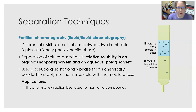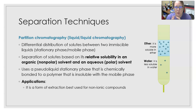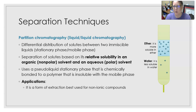Next is partition chromatography, a liquid-liquid chromatography based on the differential distribution of solutes between two immiscible liquids — two liquids that do not mix, like oil and water. Those two liquids serve as the stationary phase and the mobile phase, and separation is based on the solute's relative solubility in either an organic non-polar solvent or an aqueous polar solvent.